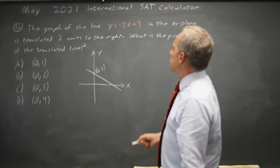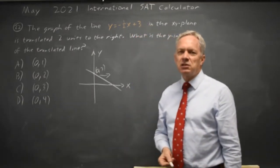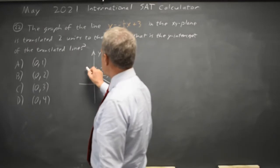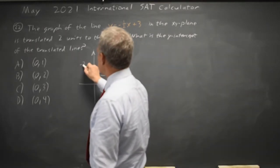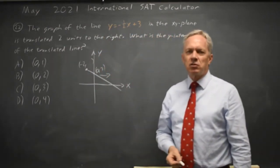And this is translated two units to the right. You're asking for the new y-intercept. You can look at it as the new y-intercept has the same y value as when x equals negative 2 on the original graph.